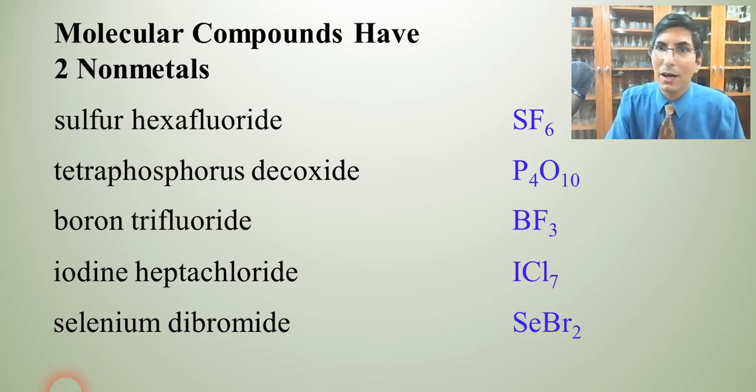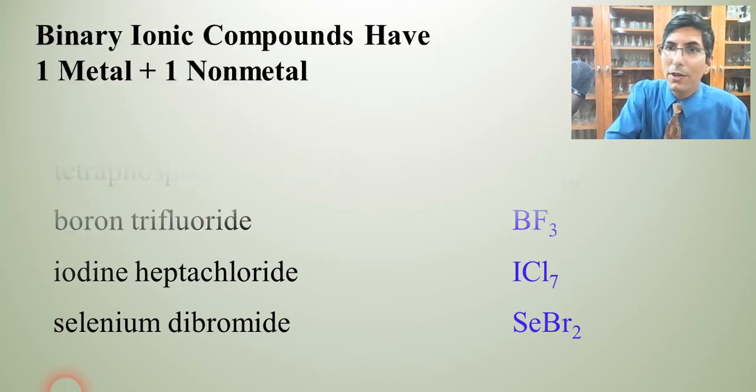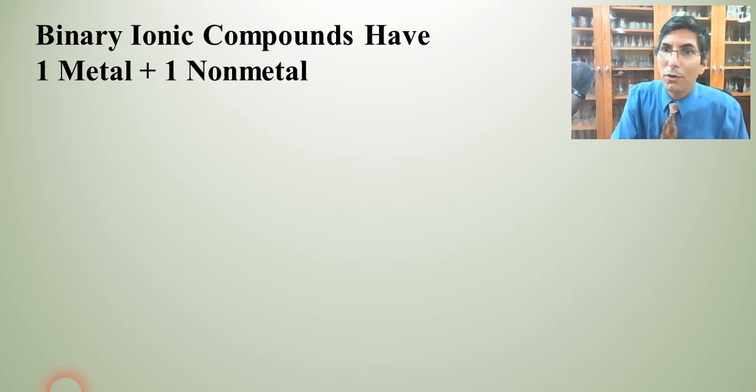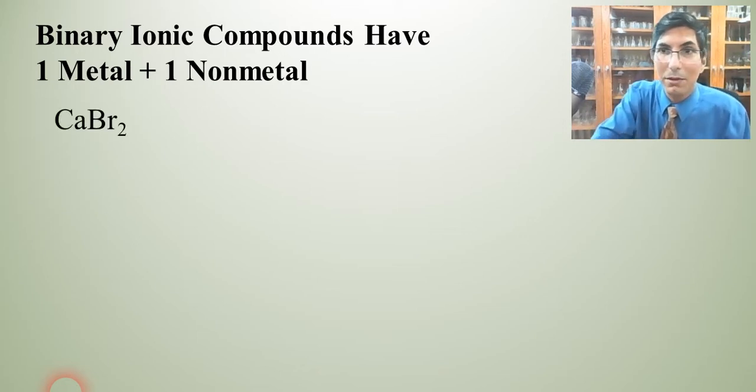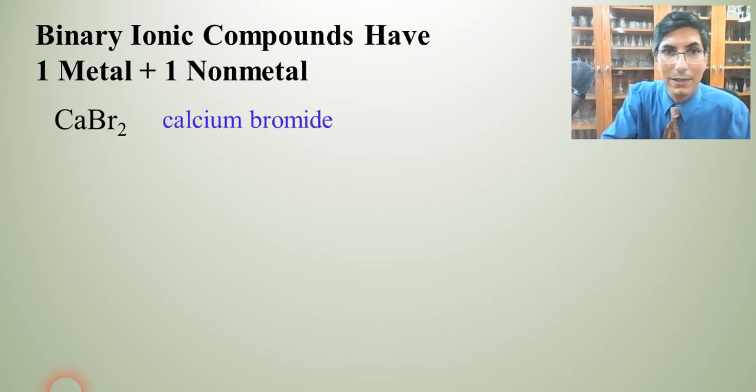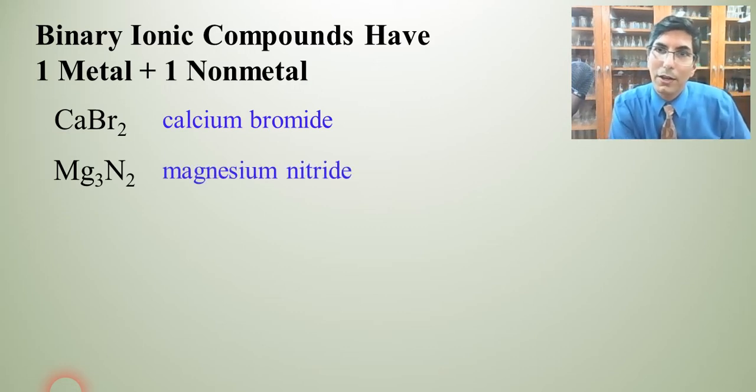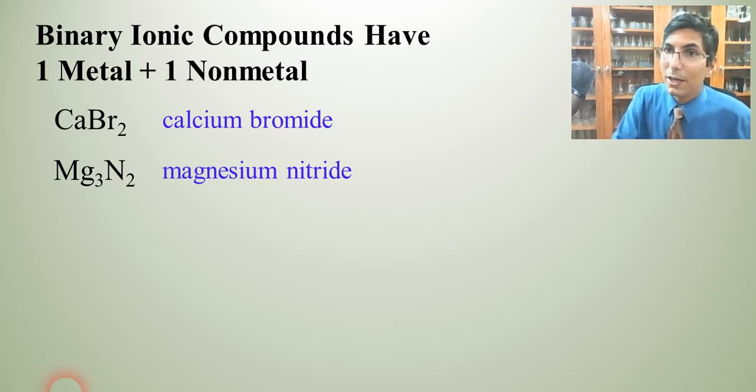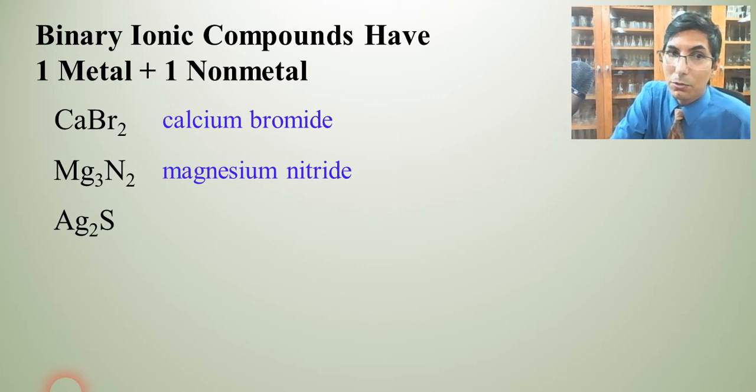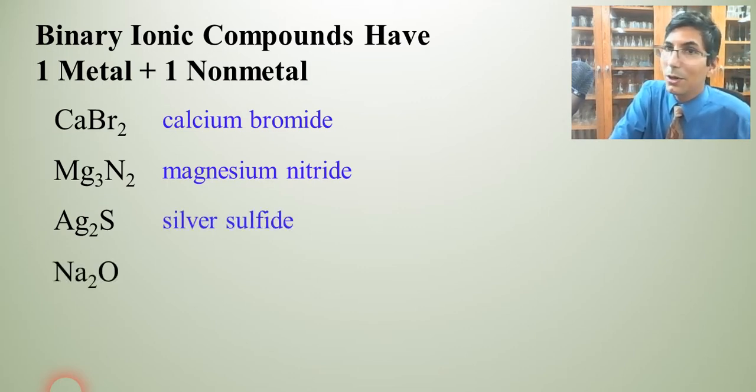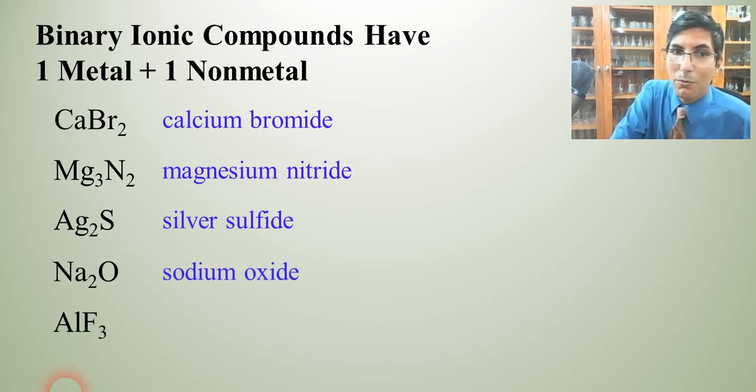Those are covalently bonded compounds that have two nonmetals in them. If we have compounds that have one metal and then one nonmetal, we're going to call those ionic compounds. If they're binary and don't have anything very unusual, it's very easy to name those. We just name the metal and then name the nonmetal and change that nonmetals ending to -ide. So we have calcium bromide, magnesium nitride, silver sulfide, sodium oxide, and aluminum fluoride.